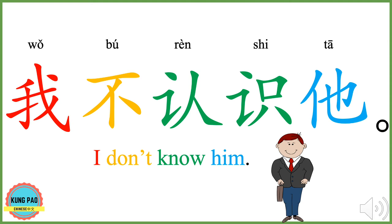我不认识他。 我 means I or me. 不 originally is the fourth tone, but because 认 after it is also fourth tone, 不 changes to the second tone. 认识 means to know or to be familiar with. 他 means he or him. 我不认识他 means I don't know him.